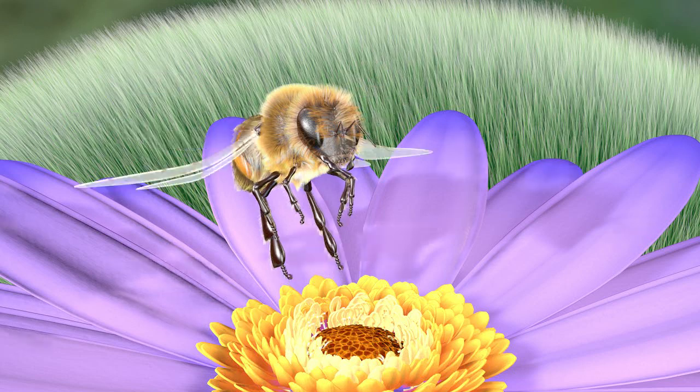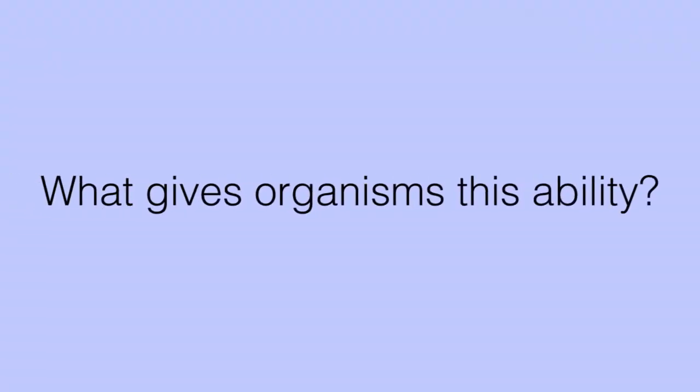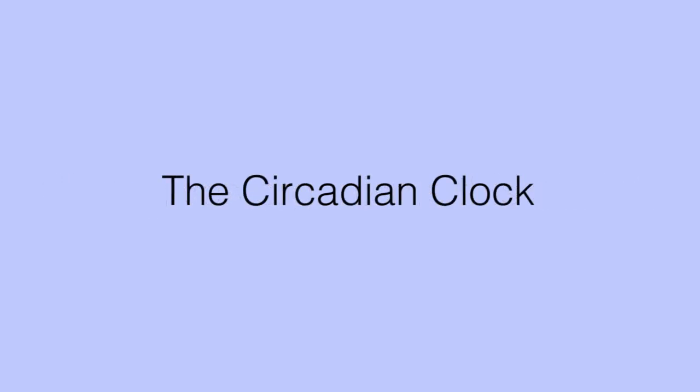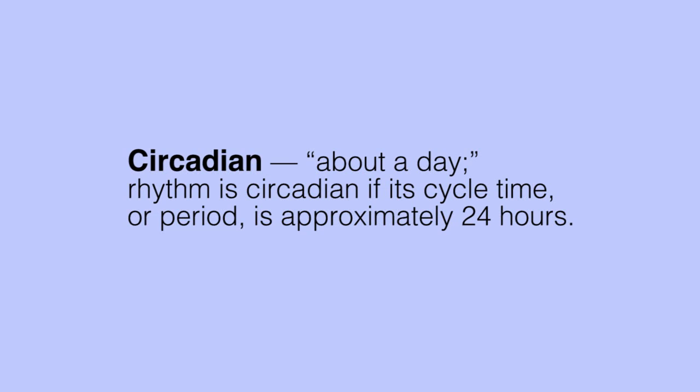For these reasons and many others, it is necessary for organisms to be able to synchronize their behavioral and biological routines with the daily environmental changes that favor them the most. So what gives organisms this ability? An organism's ability to coordinate its internal physiology and behavior with environmental rhythms is made possible by what is known as the circadian clock. Circadian means about a day, and a rhythm can be described as circadian if its cycle time or period is approximately 24 hours. These rhythms are not driven directly by the environment, but by an internal clock that creates the rhythms even when the organism is isolated from daily light-dark signals.